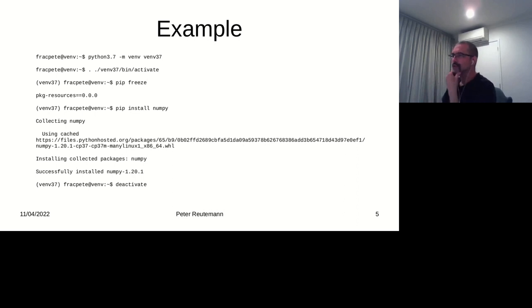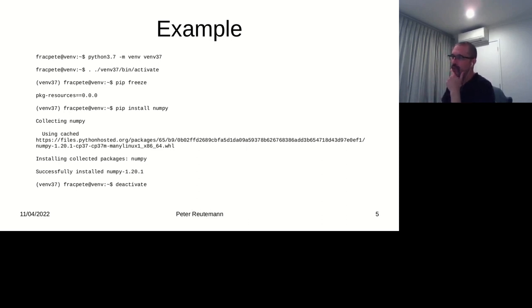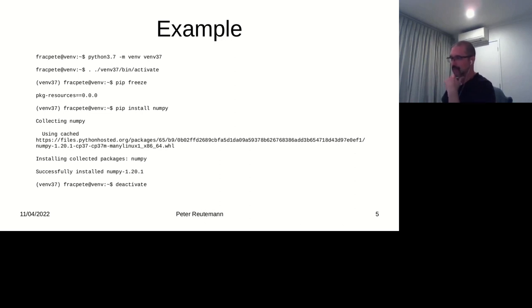By executing pip freeze, you can see there's not much in there — just one particular package, package-resources. You can then install a package, for instance NumPy via pip install, and then run pip freeze again to see NumPy and all its dependencies. Once you're done with a particular environment, you can just enter 'deactivate' and execute that.